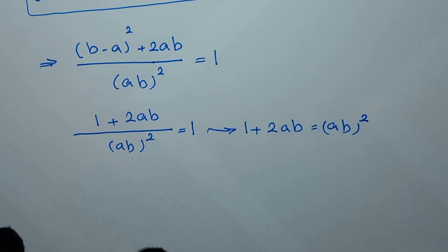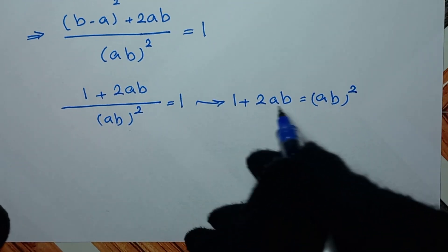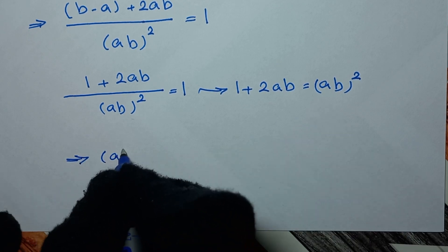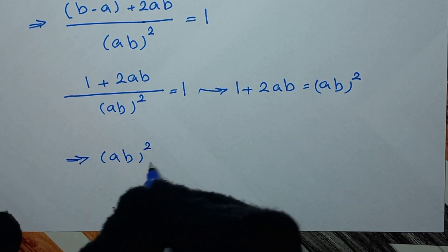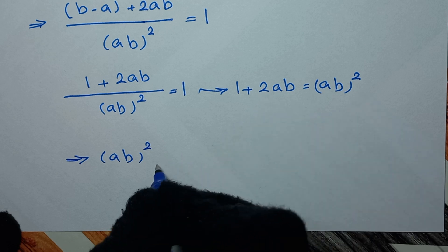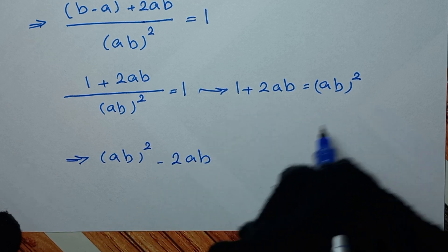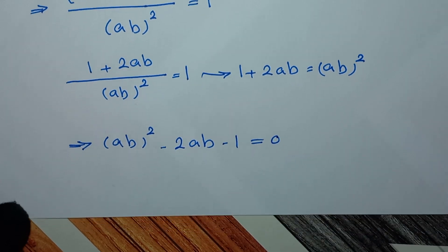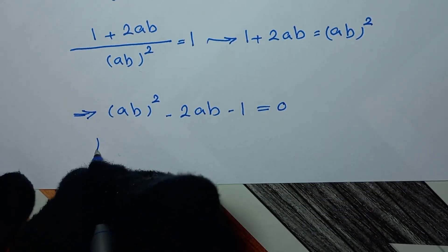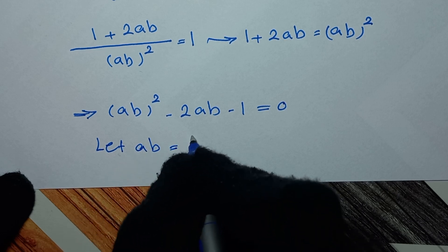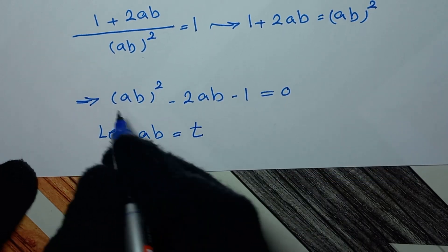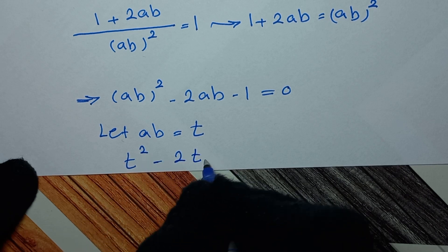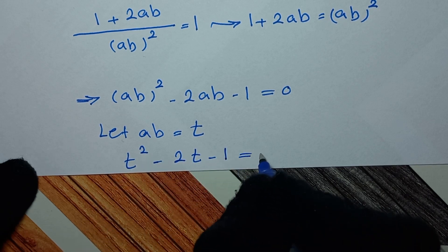In the next step, we take terms to one side: (ab)² - 2ab - 1 = 0. We let ab = t, so the equation becomes t² - 2t - 1 = 0.